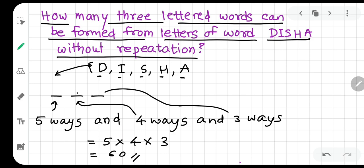That's why our answer is 5 into 4 into 3, which is 60. So you can form 60 words which are made up of these letters. If I go on writing those 60 words in alphabetic order, first will be ADH.